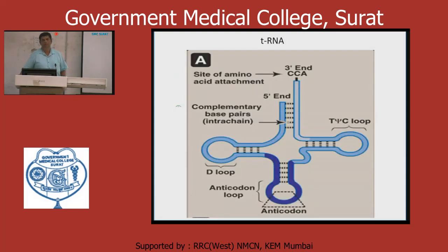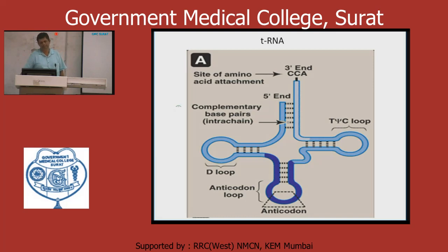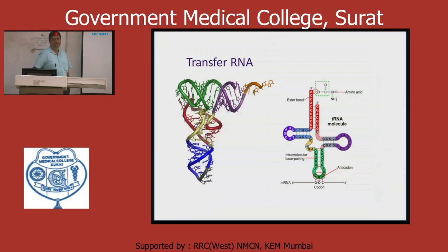Ribozyme — peptidyl transferase is one type of ribozyme. The tRNA has a cloverleaf structure with various arms: the TψC loop, anticodon arm, D loop, and the 3' end where there is the CCA site — the site of amino acid attachment. There are approximately 70 to 95 nucleotide base pairs making up tRNA. This is the three-dimensional structure of tRNA.